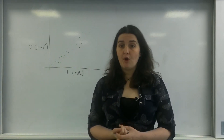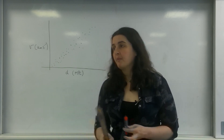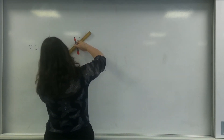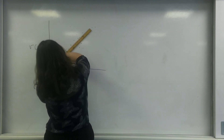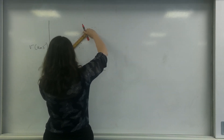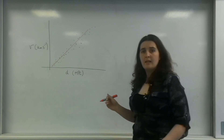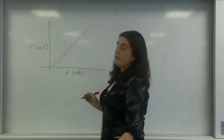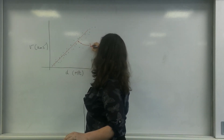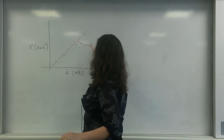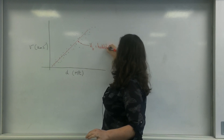With all positive correlations you can take a line of best fit. So if I took a line of best fit for this, we would get something like that. The gradient of this line of best fit is known as H₀, or Hubble's constant.